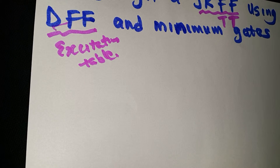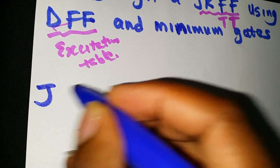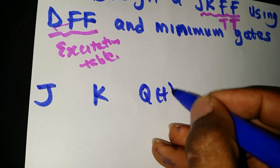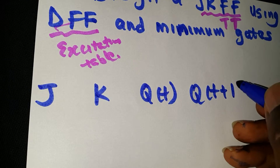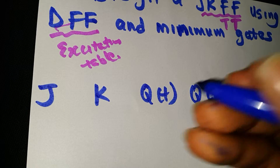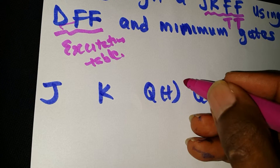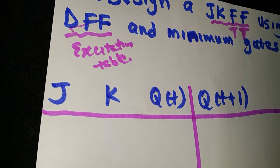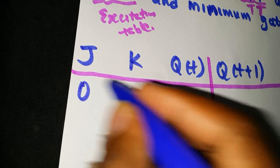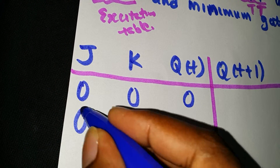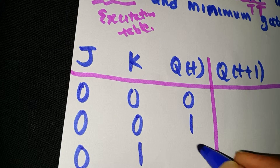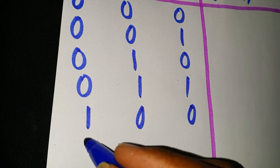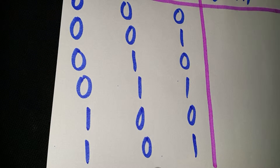The first thing you have to do is write down the JK flip-flop truth table: Q(t) and Q(t+1). The rows are: J=0, K=0, Q(t)=0 → Q(t+1)=0; J=0, K=0, Q(t)=1 → Q(t+1)=1; J=0, K=1, Q(t)=0 → Q(t+1)=0; J=0, K=1, Q(t)=1 → Q(t+1)=0.